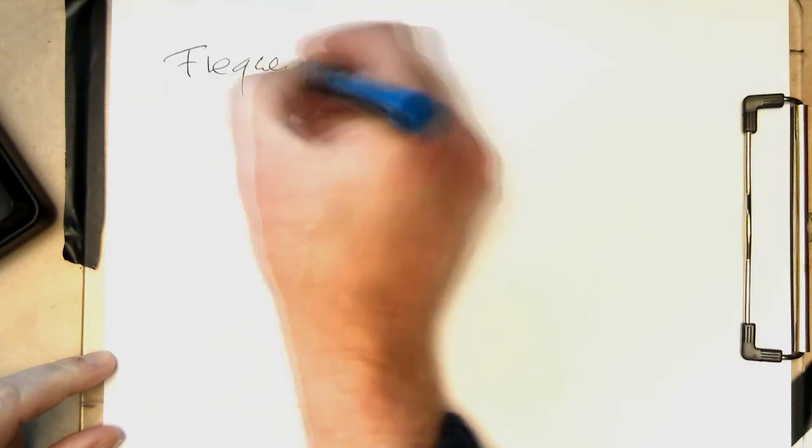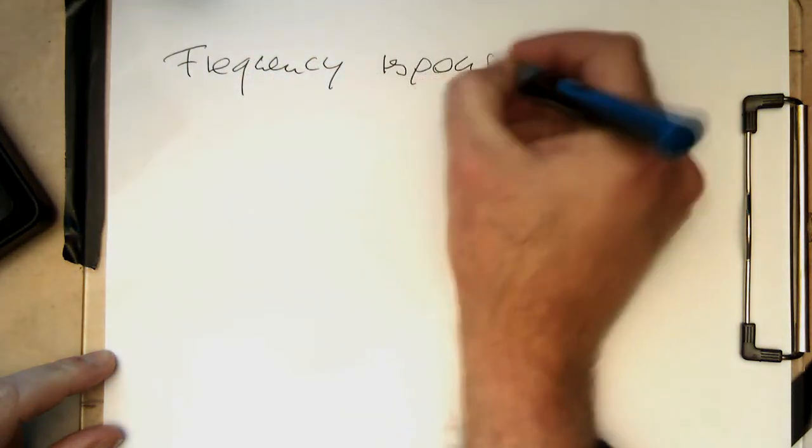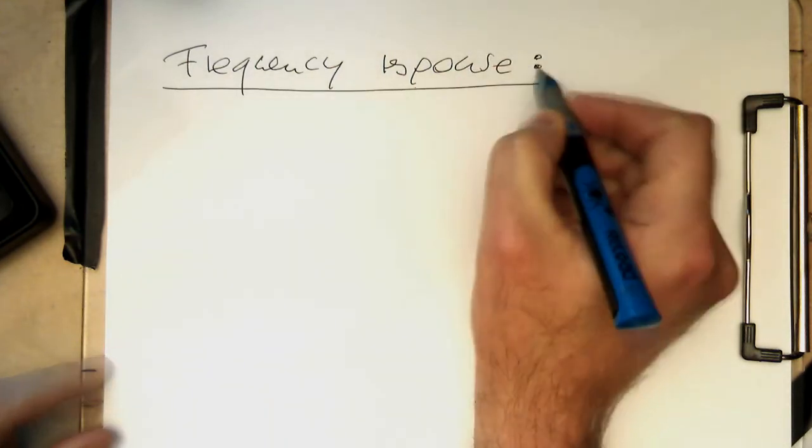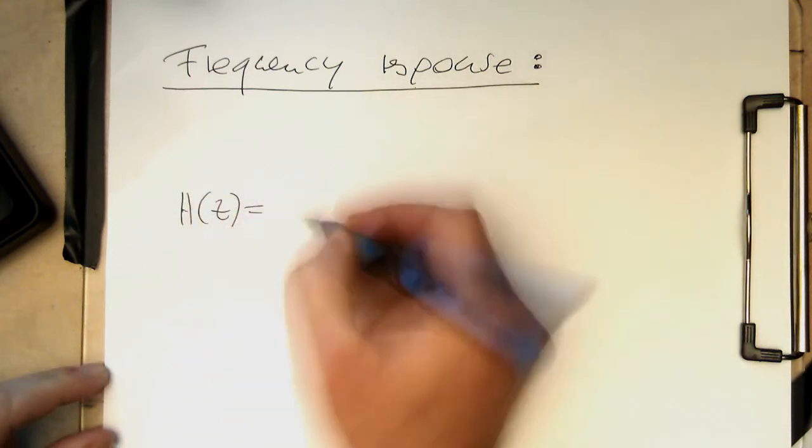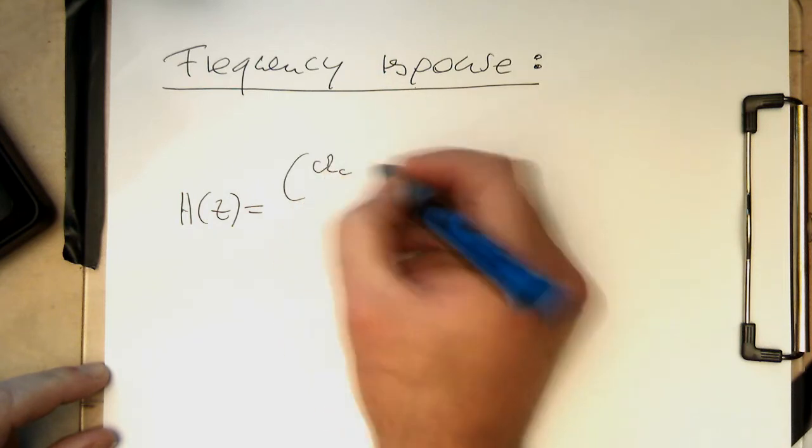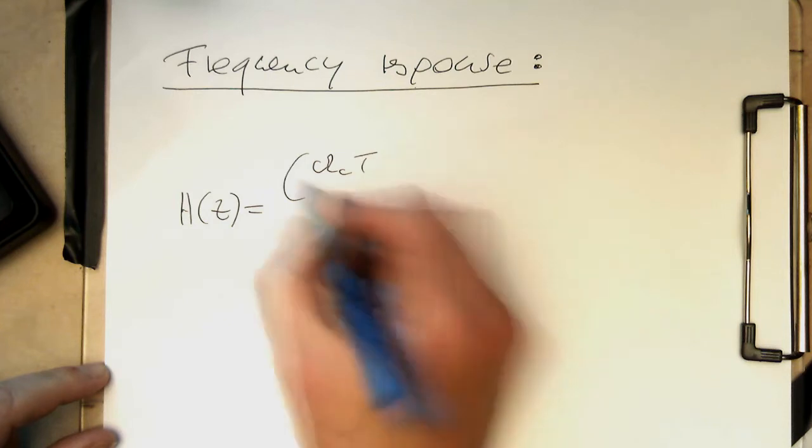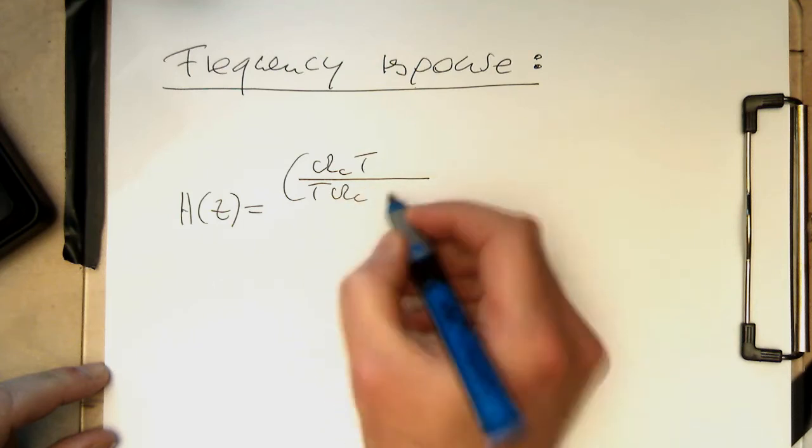So let's now look at the frequency response of our bilinear transformed low-pass filter. Let's write this lengthy formula again down here. Remember, that's an analog filter just now, so we have actually a time, a sampling interval T.